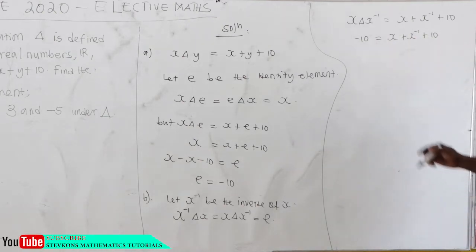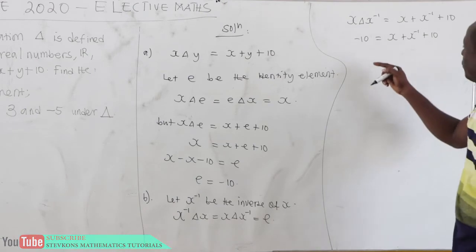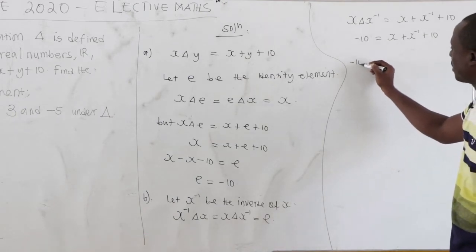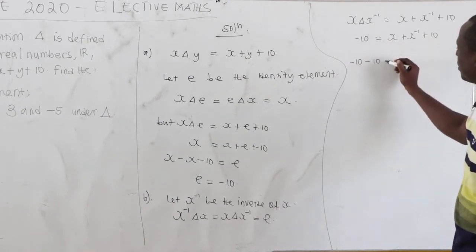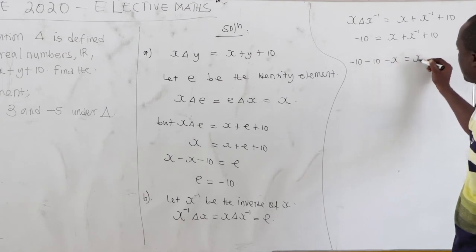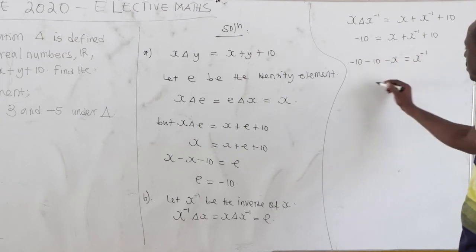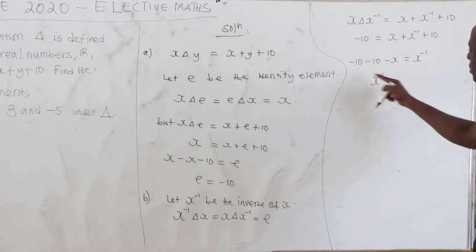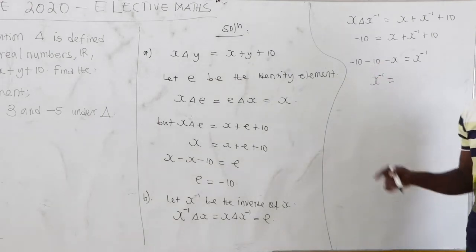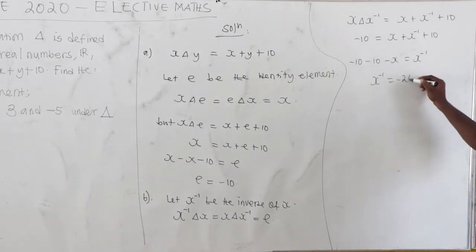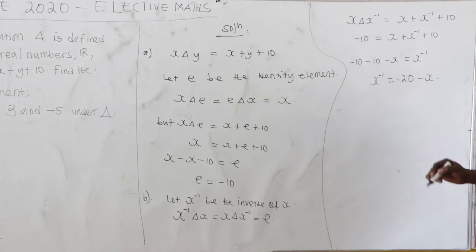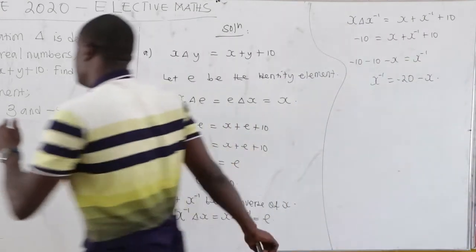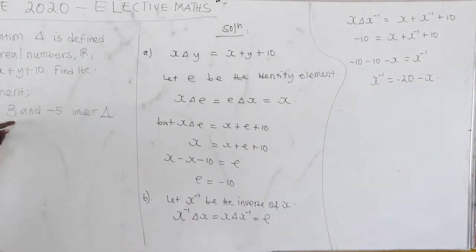We want to find x-inverse. Making x-inverse the subject: negative 10 minus 10 minus x equals x-inverse. So x-inverse equals negative 20 minus x. The question asks for the inverses of 3 and negative 5.